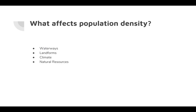When we talk about population density in terms of geography, we're going to look at four things that affect population density, and these are physical features: waterways, landforms, climates, and natural resources.